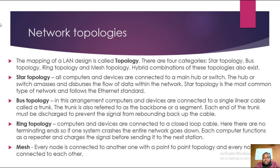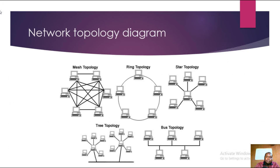In ring topology, computers and devices are connected to a closed loop cable. There are no termination ends, so if one system crashes the entire network goes down. Each computer functions as a repeater and boosts the signal before sending it to the next station. In mesh topology, every node is connected to another with a point-to-point connection, and every node is connected to each other.